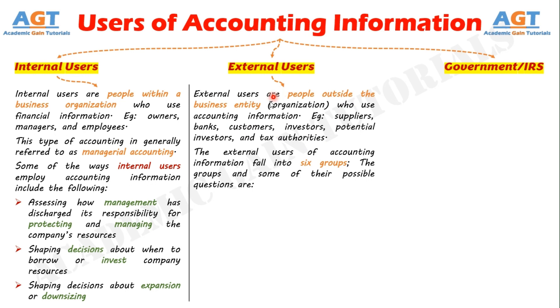The external users of accounting information fall into six groups. Each has different interests in the company and wants answers to unique questions. The groups and some of their possible questions are as follows.